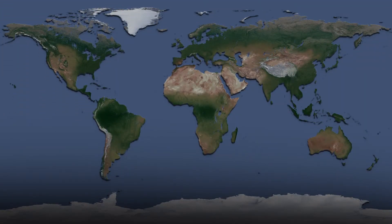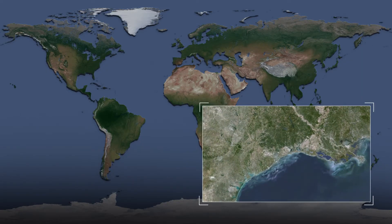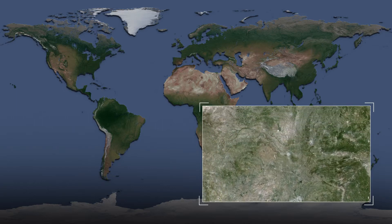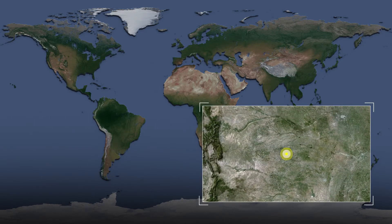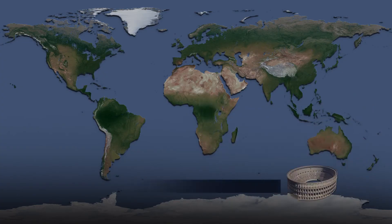On this map, we'll show population growth from the year 1 CE to the present, and project our growth into the year 2050. Population concentrations will be indicated by dots, each of which will represent 1 million people. In areas where people are spread out and don't live in concentrations of 1 million, dots are placed in the middle of their approximate range. Historical references will be provided by images and text at the bottom of the screen.